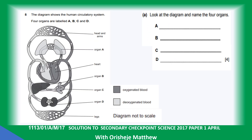Question five: the diagram shows the human circulatory system with four organs labelled A, B, C, and D. Let's identify those organs: we have the lungs, the liver, the small intestine, and the kidney.